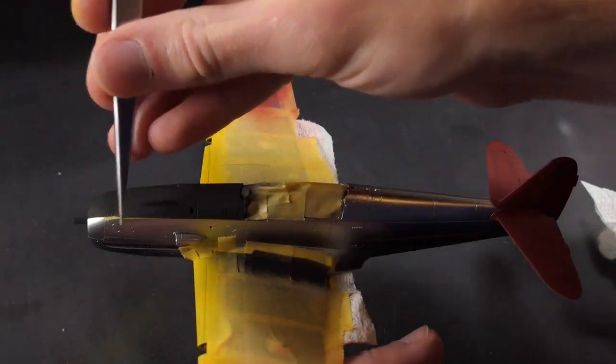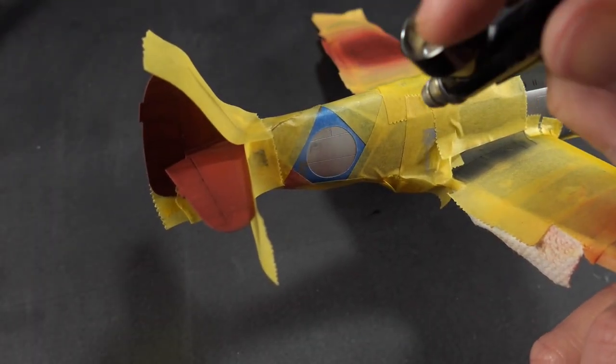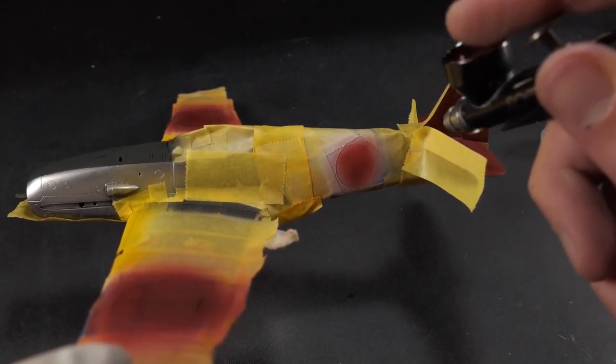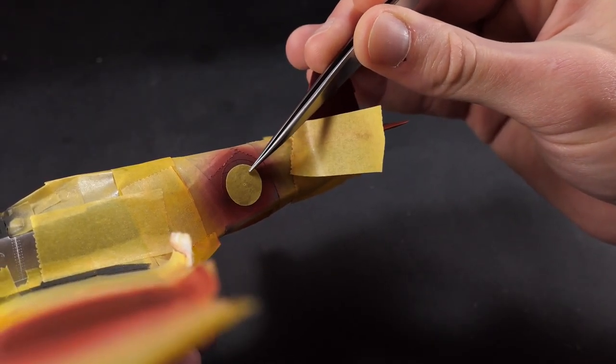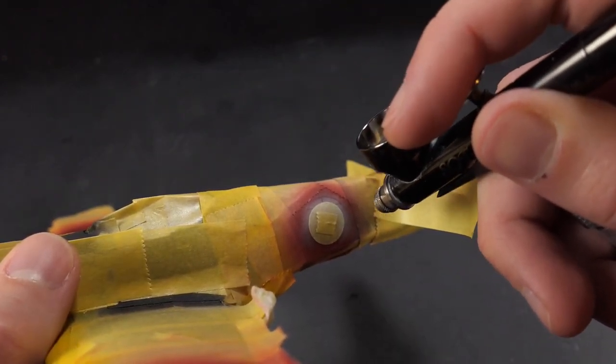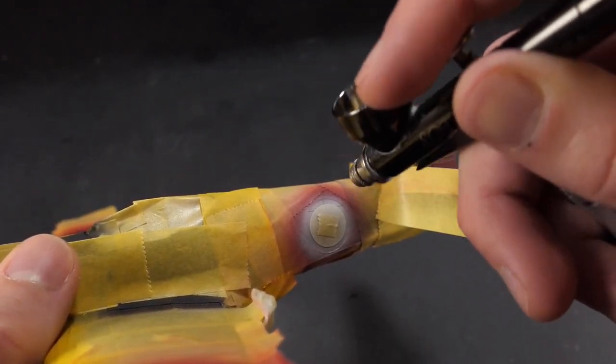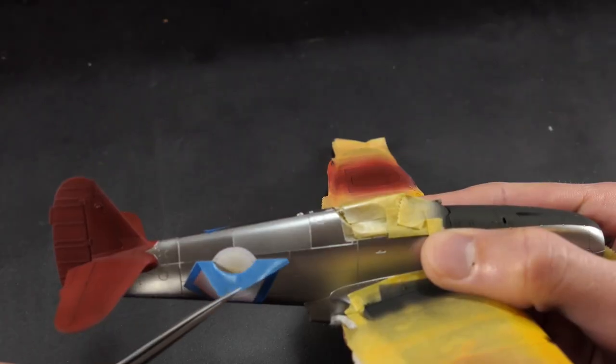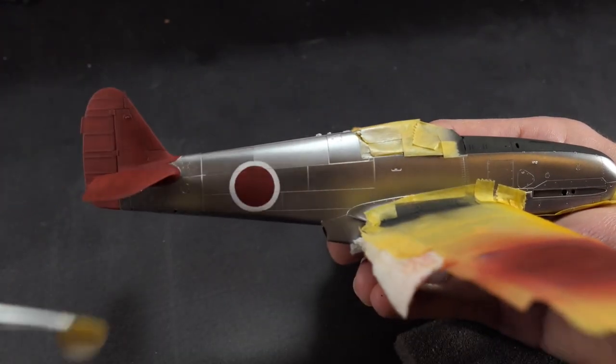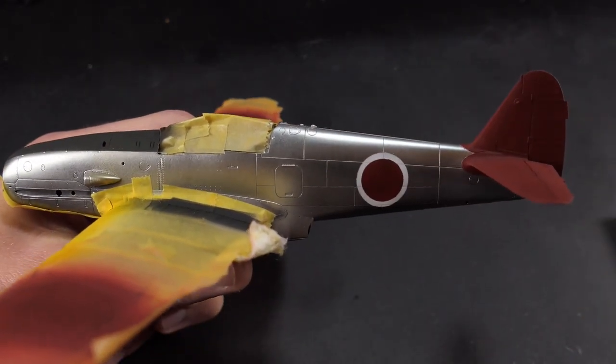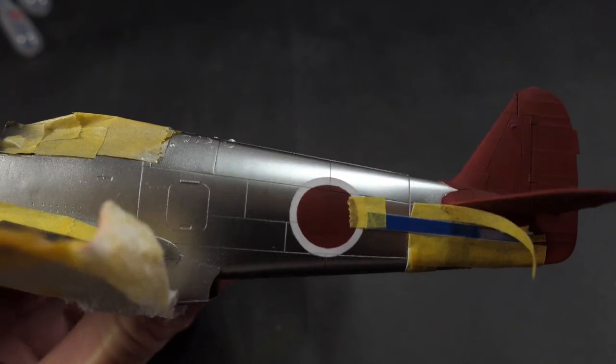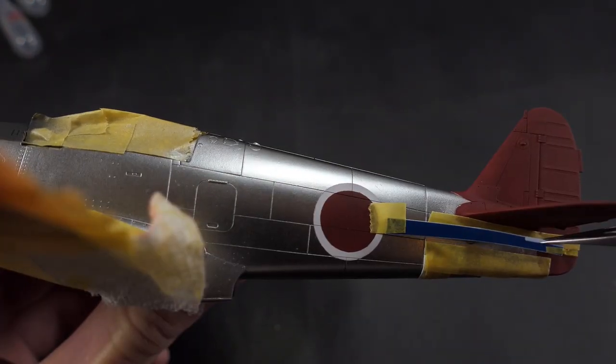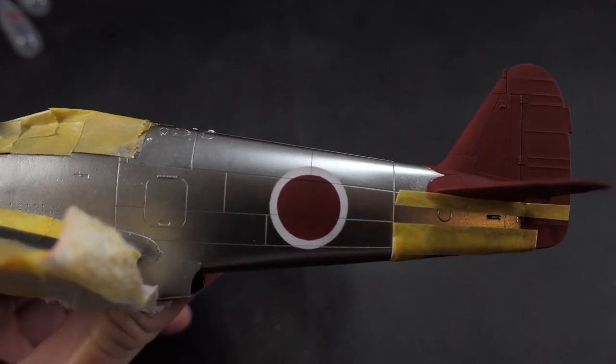In order to paint the blue stripe I cut the decals out to the exact dimensions that I needed, taped them on, and then masked around them.